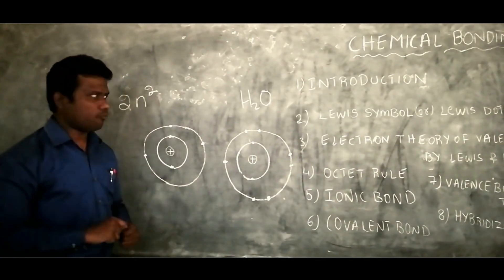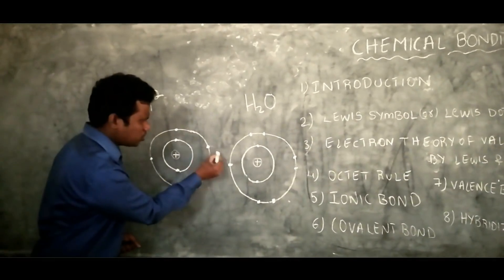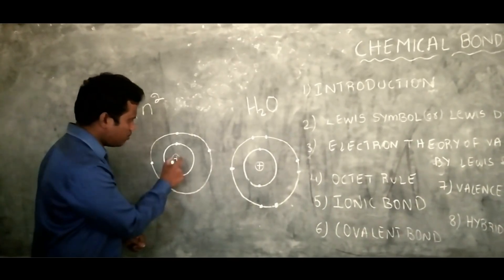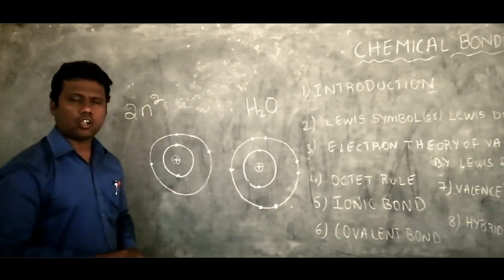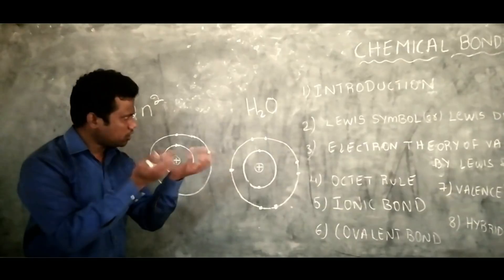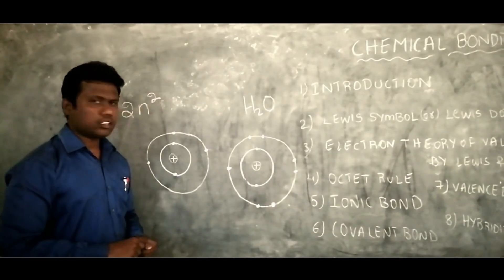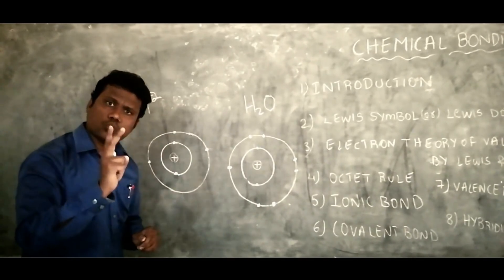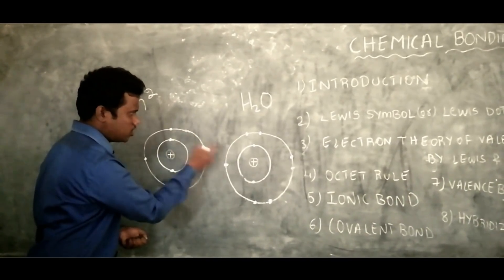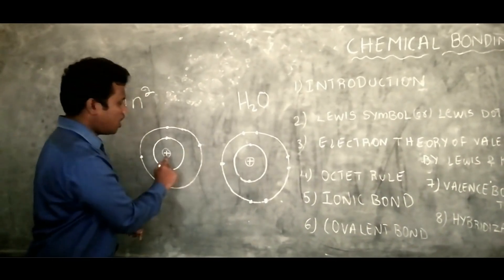There is one more consideration. When we bring two atoms close to each other, electron-electron repulsion is possible, and nucleus-nucleus repulsion is also possible. So bringing two atoms together produces attraction (positive-negative) and repulsion (negative-negative and positive-positive).